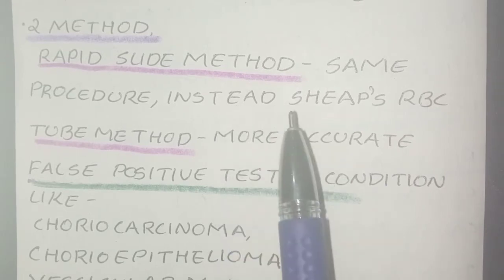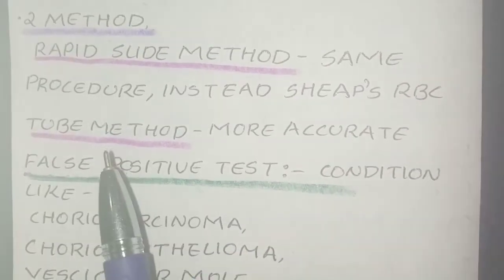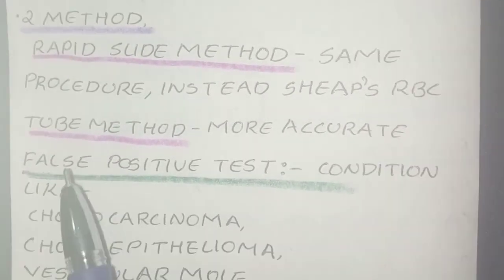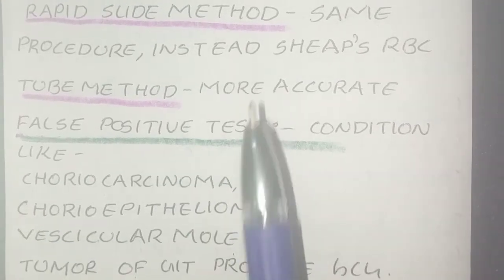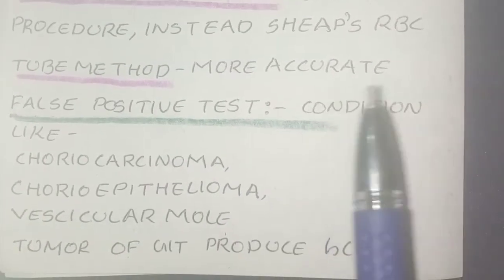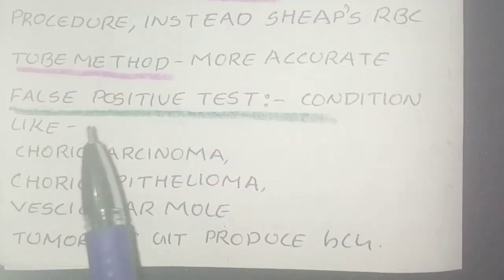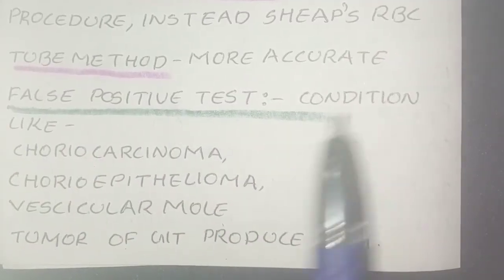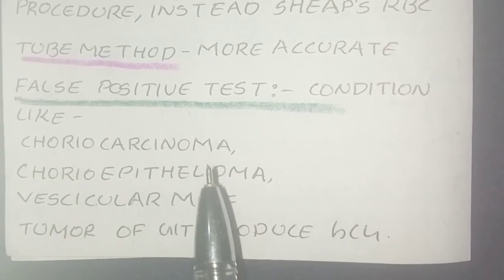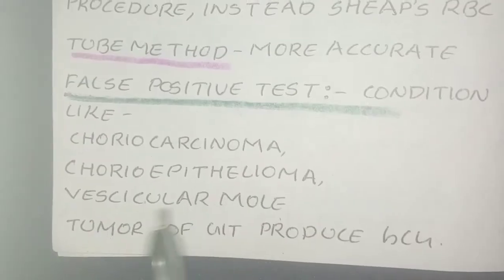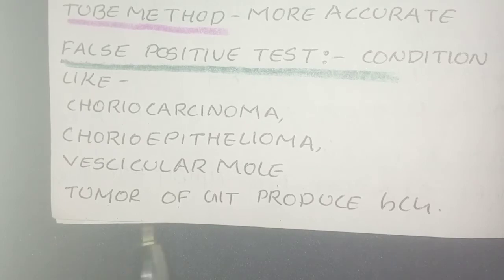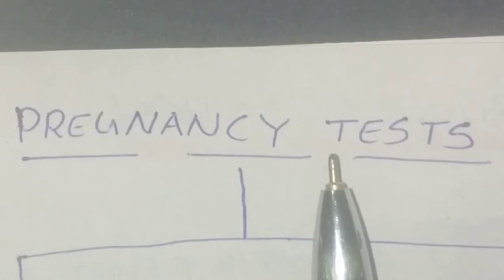Another method is the tube method, which is more accurate and less time-consuming. Sometimes a false positive test occurs — this happens mainly in choriocarcinoma, chorioepithelioma, vesicular mole, and tumors of the GIT which produce HCG. That's all for the pregnancy test.